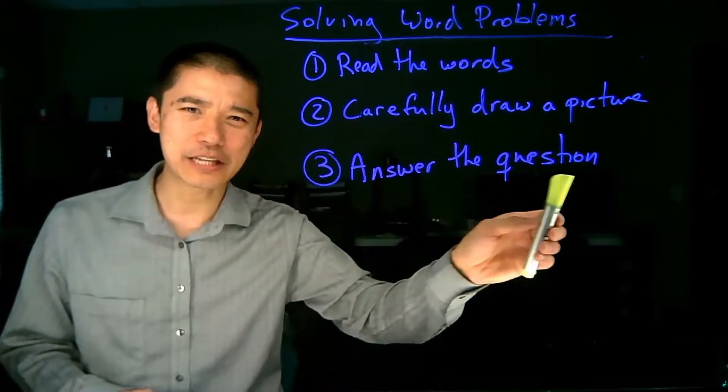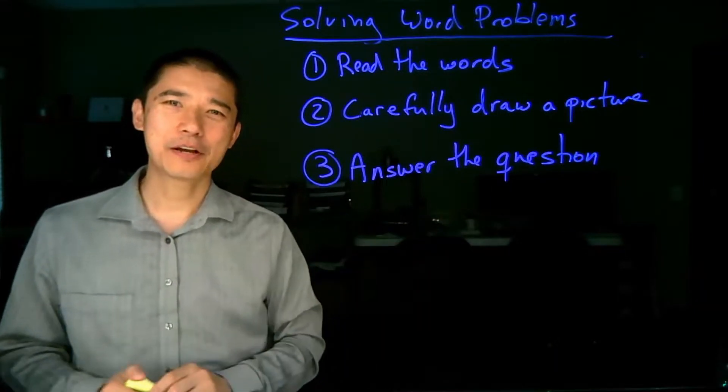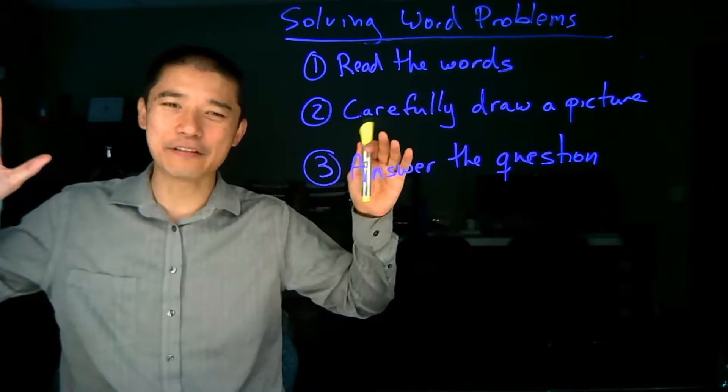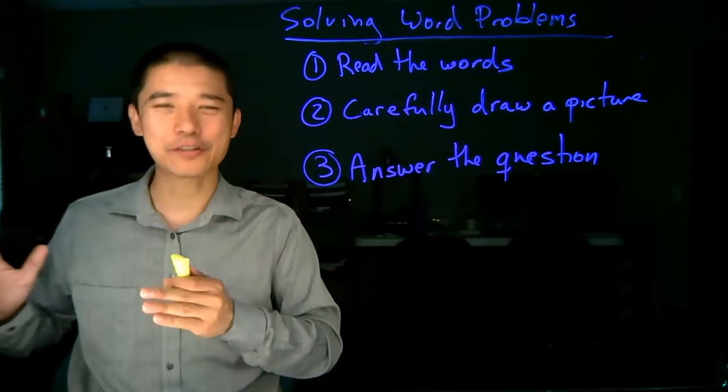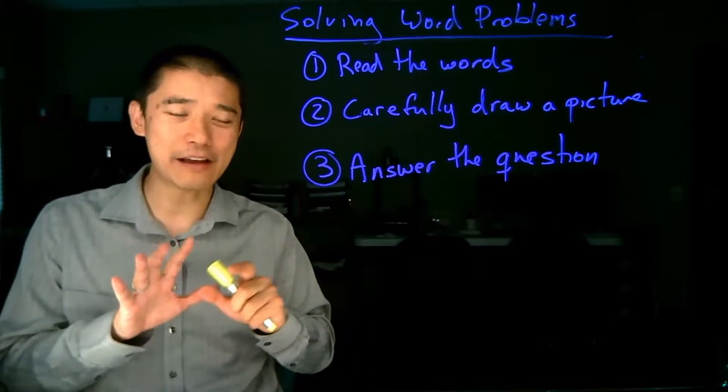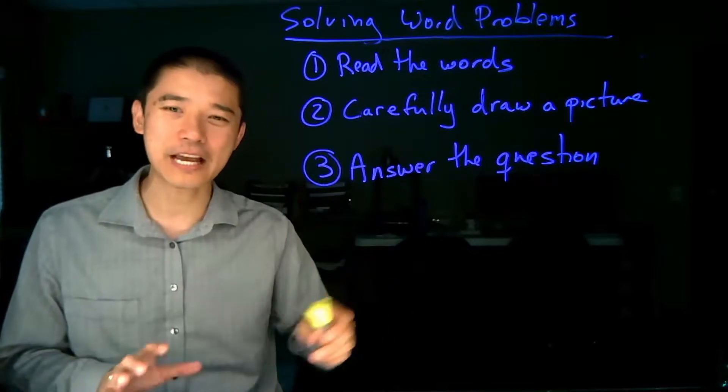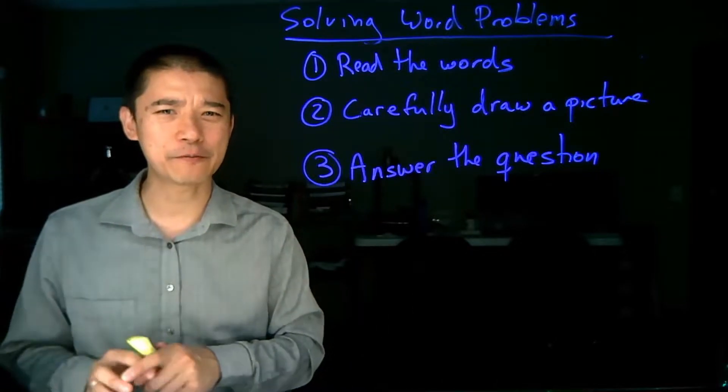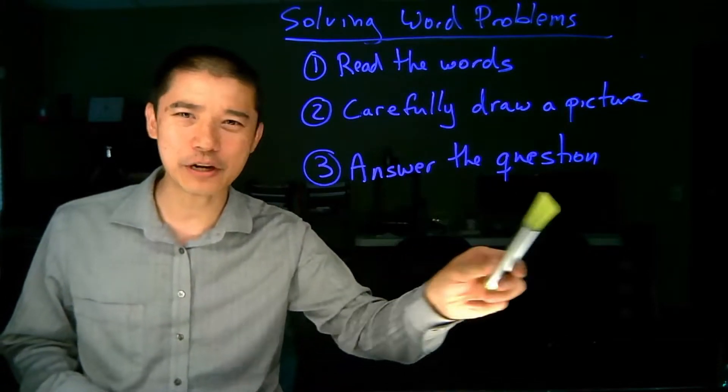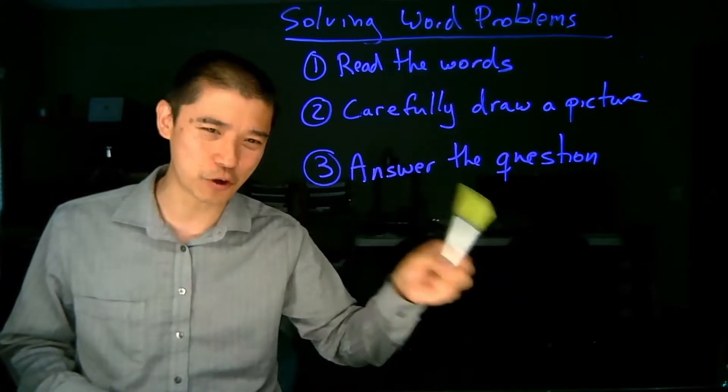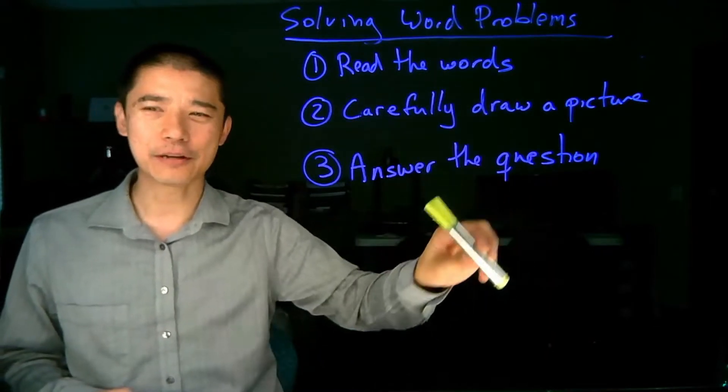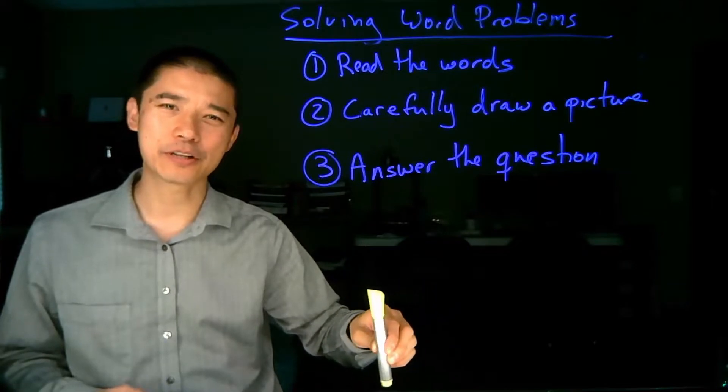And the last one is to answer the question. Again, this seems obvious, but sometimes when you get to the end of a calculation, you feel that sense of I'm done, and you don't actually go back and make sure you answer the question being asked. Some problems have you calculate the length of one side, but they're asking you for a different piece of information and that's only a part of it. So make sure when you go back through the word problems, make sure you read the question and then make sure that your work actually answers that question.